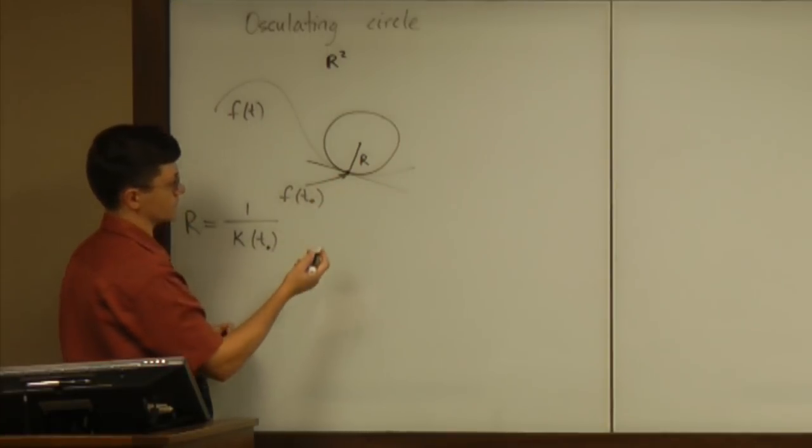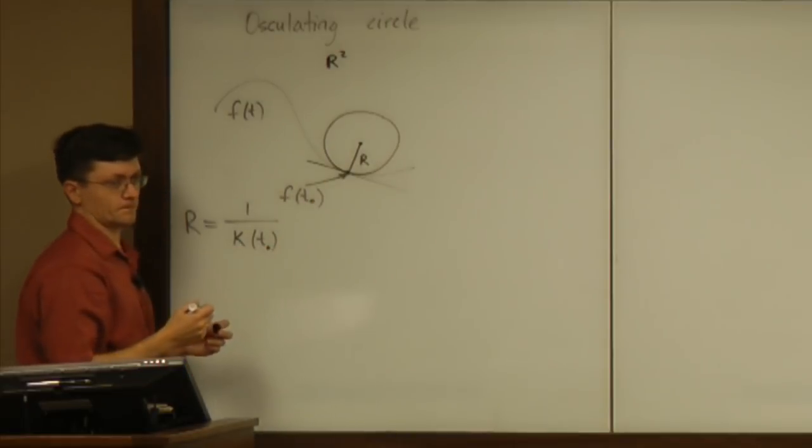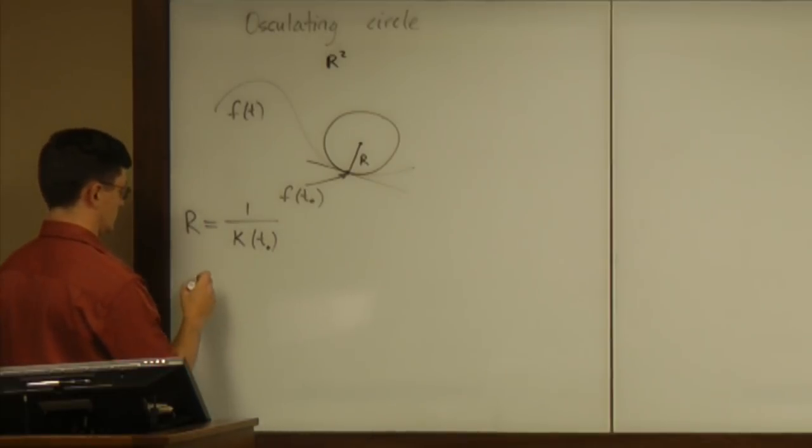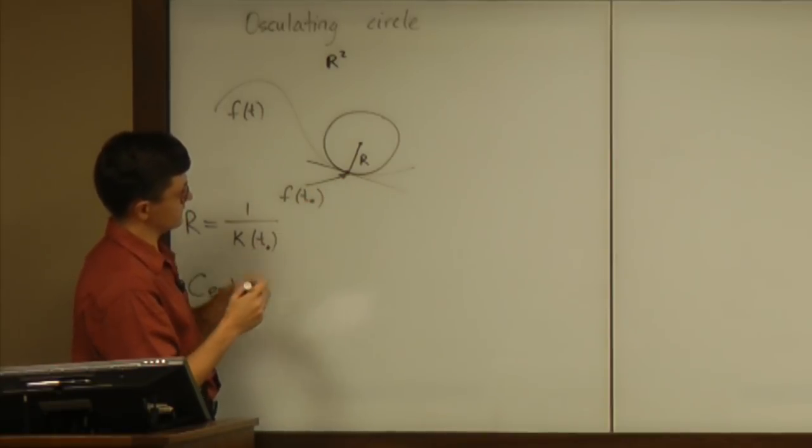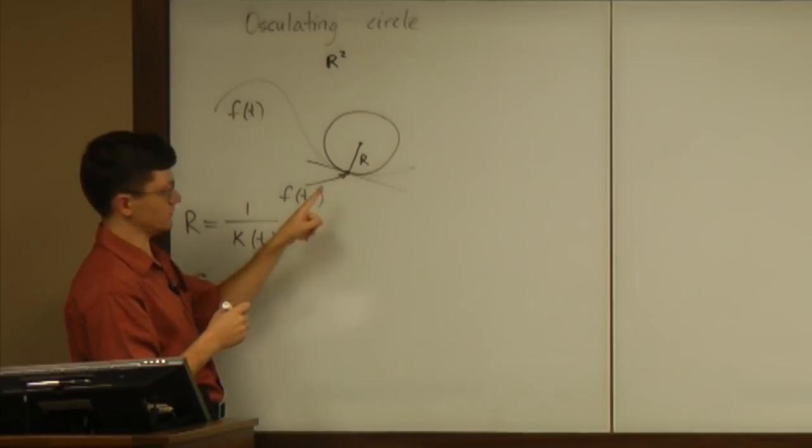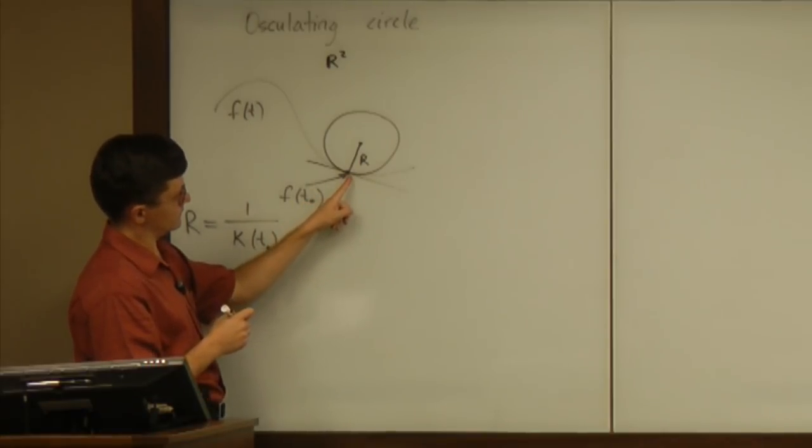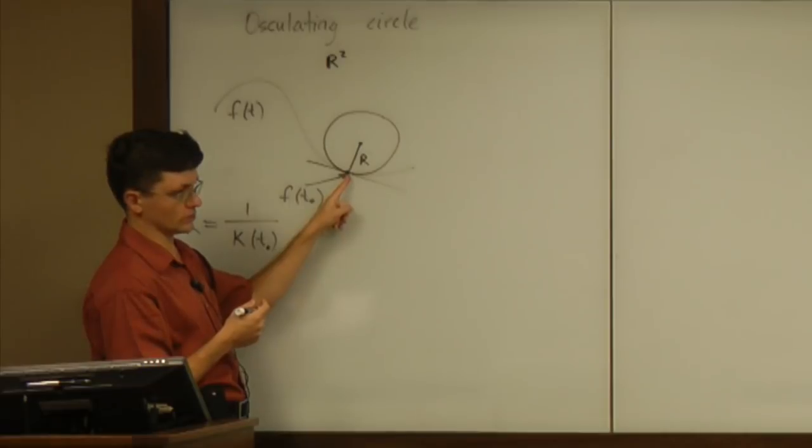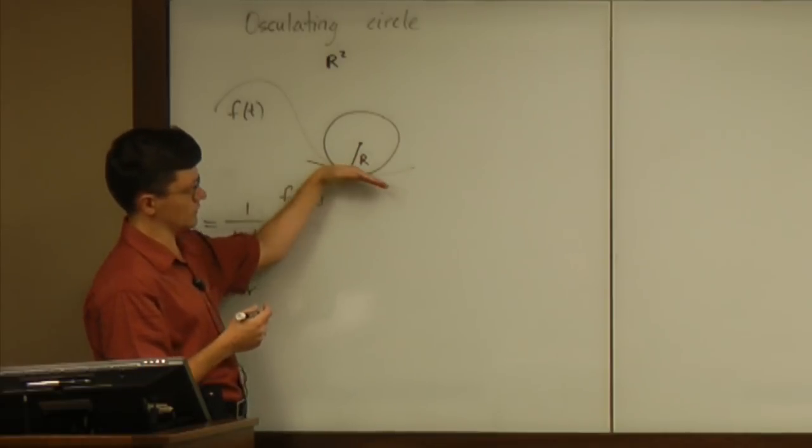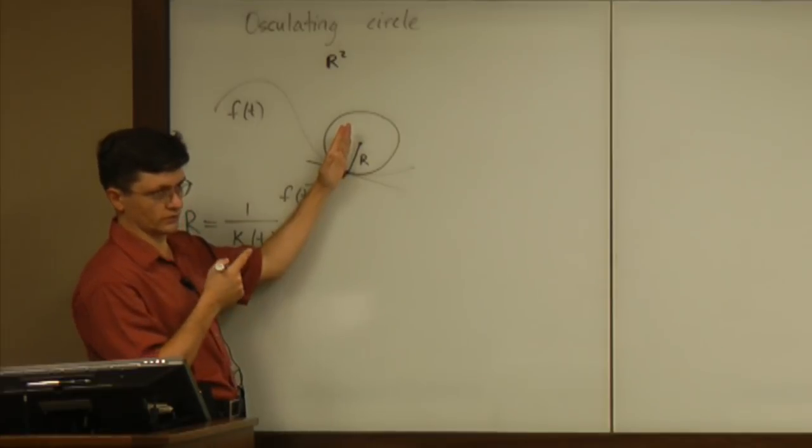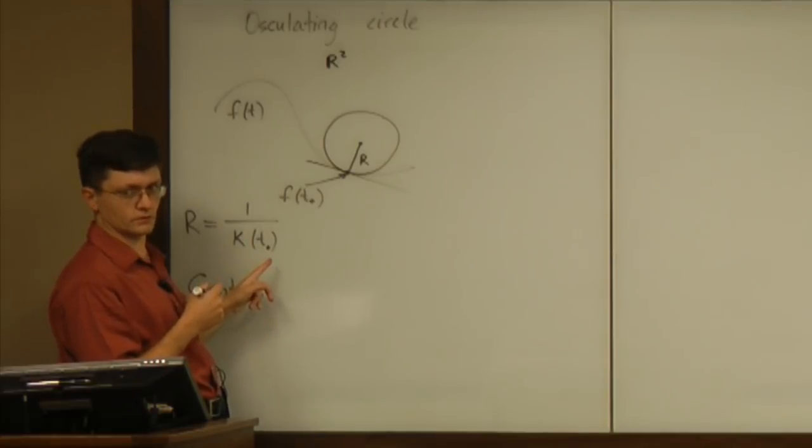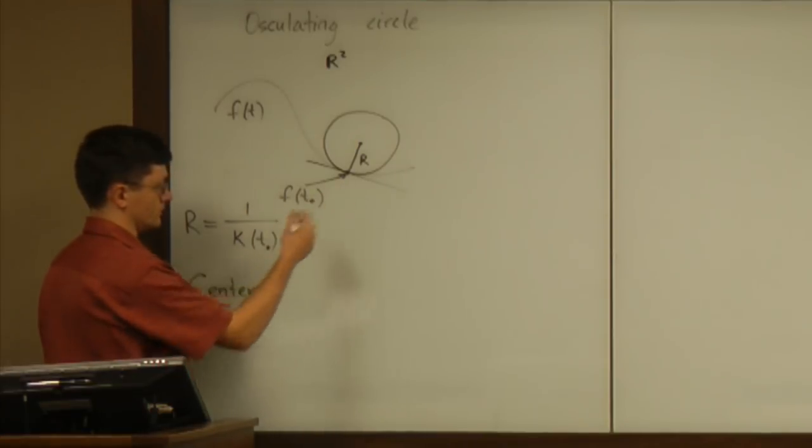The sort of more difficult part is to find the center. So, to find the center, you can argue as follows. You know what the point is, right? It's f of t0. And then, you know where the center is with respect to that point. You basically have to go from that point in the direction perpendicular to the tangent line. And you know already how long you should go there. You already know the radius.